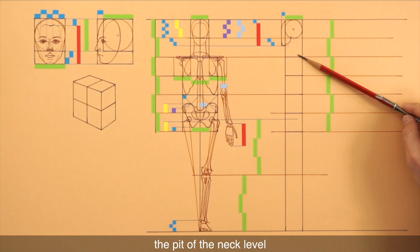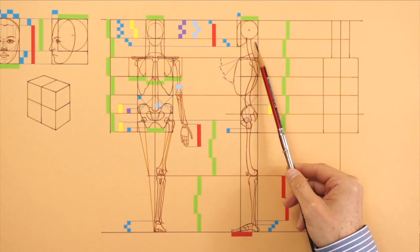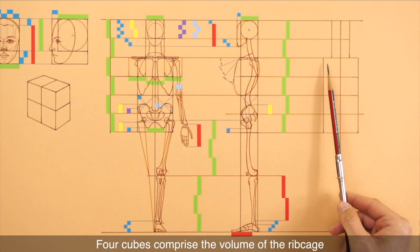The pelvis in the side view fully fits inside the five eye measuring unit depth. Four cubes comprise the volume of the ribcage, and four more cubes contain the waist and the pelvis.